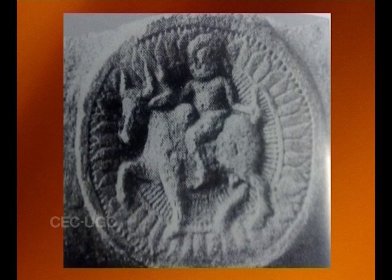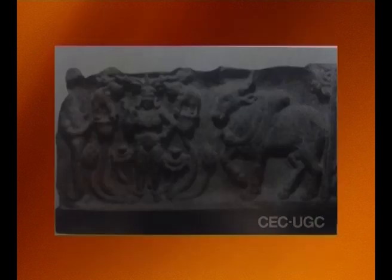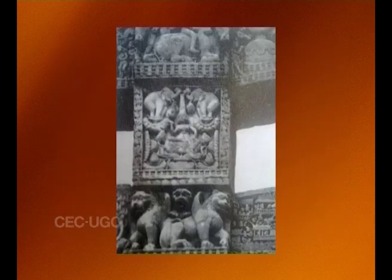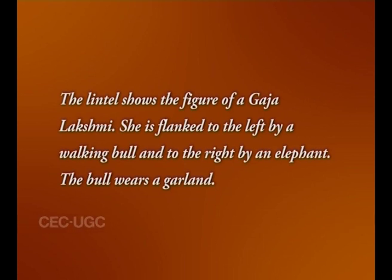In Shunga Mathura, a few figures of bulls made of red sandstone are quite interesting. A crossbar in Mathura Museum is carved with a bull-bloomed lotus medallion showing a spirited bull with a rider on its back, who holds the tail of the animal with his left hand. One fragment of a door lintel from Kosambi in the collection of Allahabad Museum shows the figure of Gaja Lakshmi, flanked to the left by a walking bull and to the right by an elephant. The bull wears a garment.